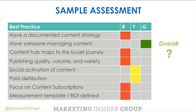I want you to take a second and think about how you would grade yourself against each one of these seven core components of best practice content marketing. Do you have a documented content strategy? Do you have someone managing it? Have you mapped your content to the buyer journey? Are you consistently publishing? Are you activating your social channels? Are you utilizing paid distribution, focusing on subscribers, and measuring ROI?